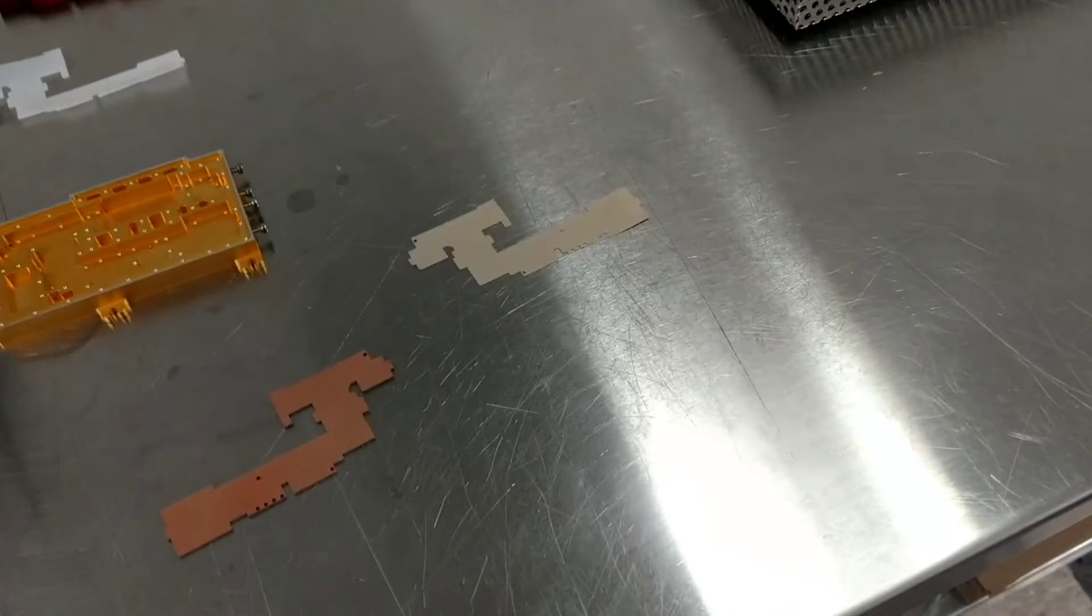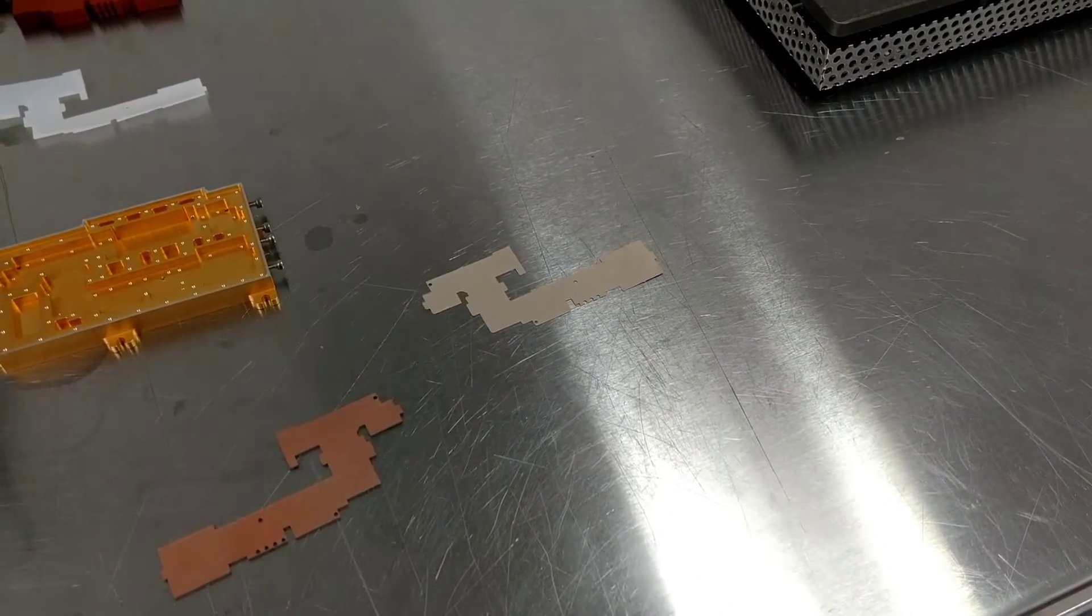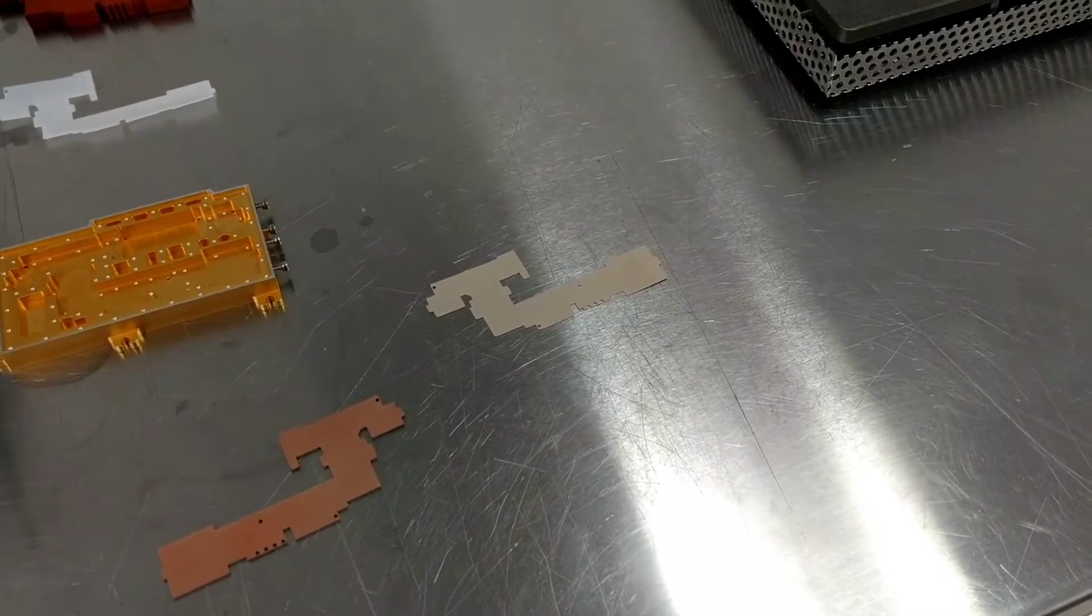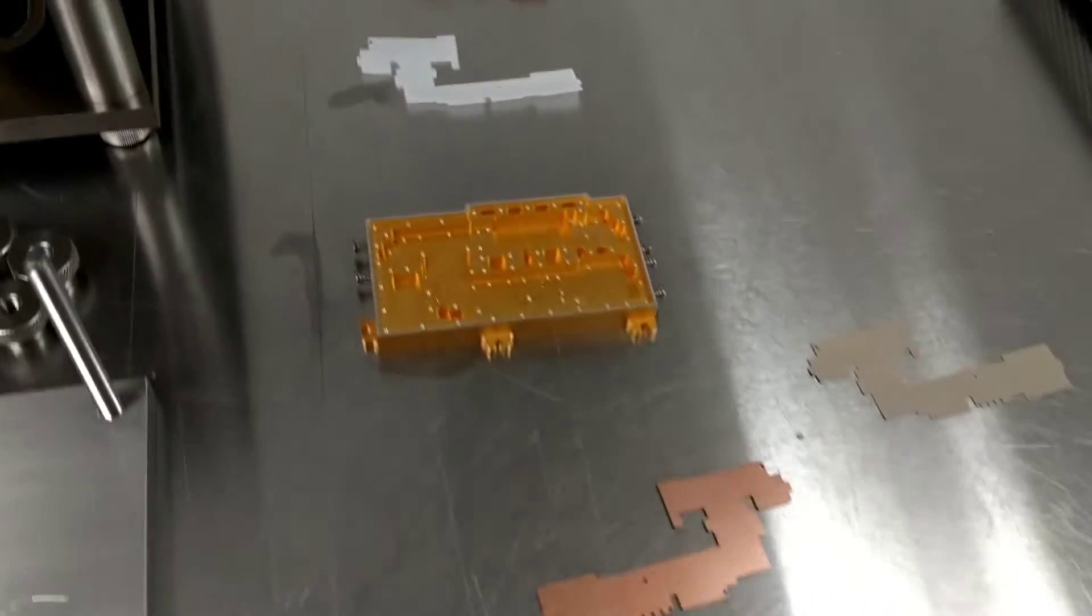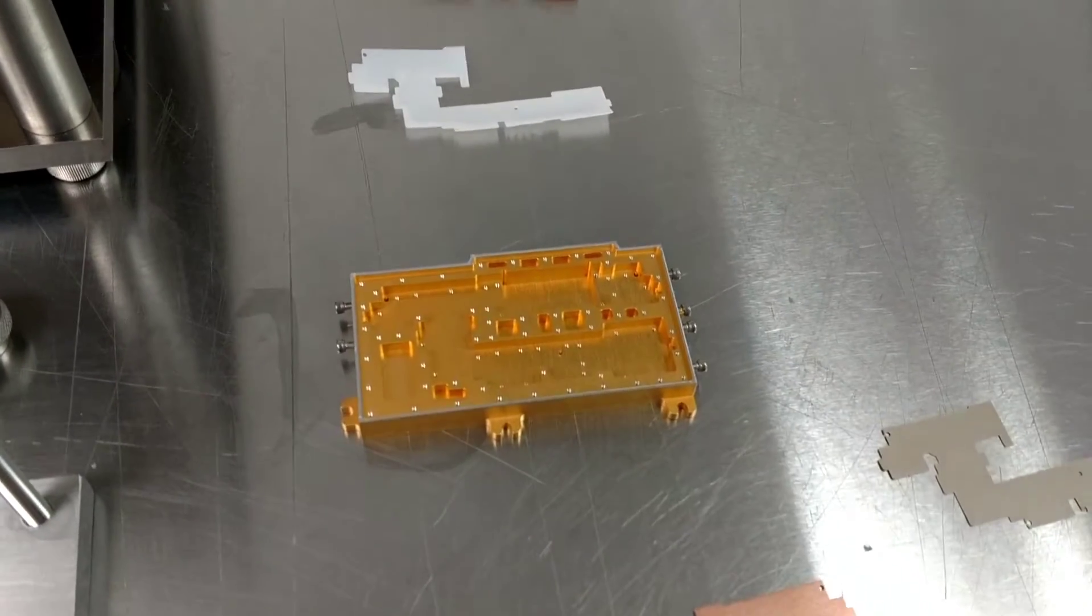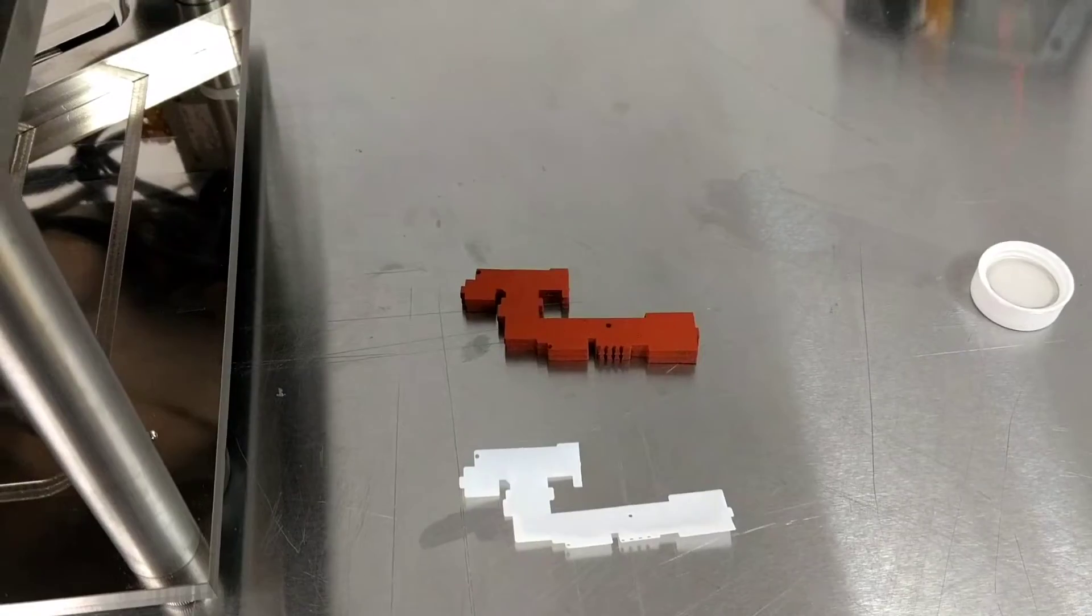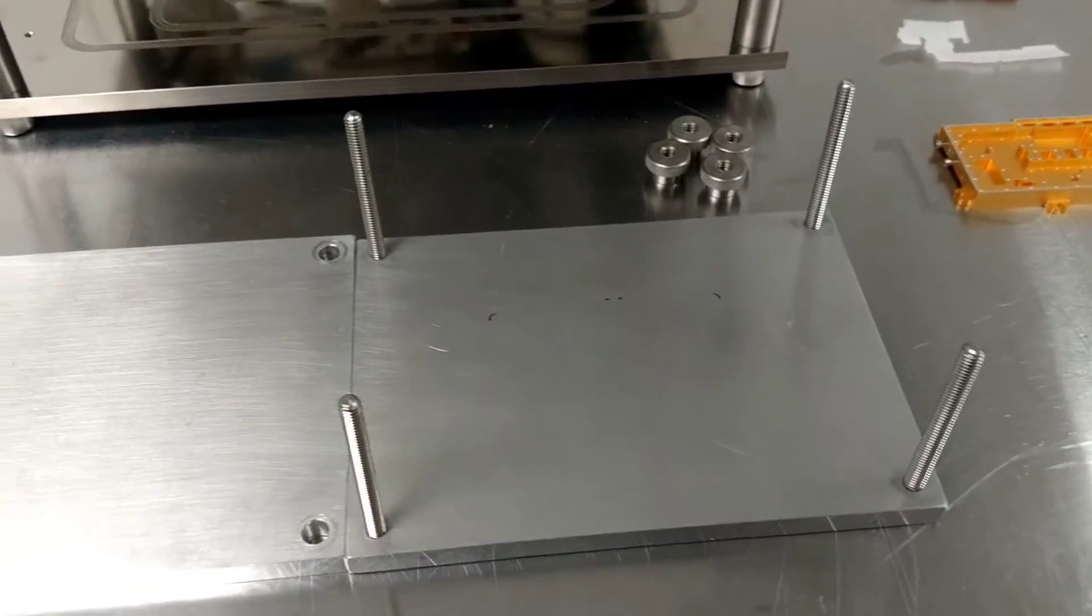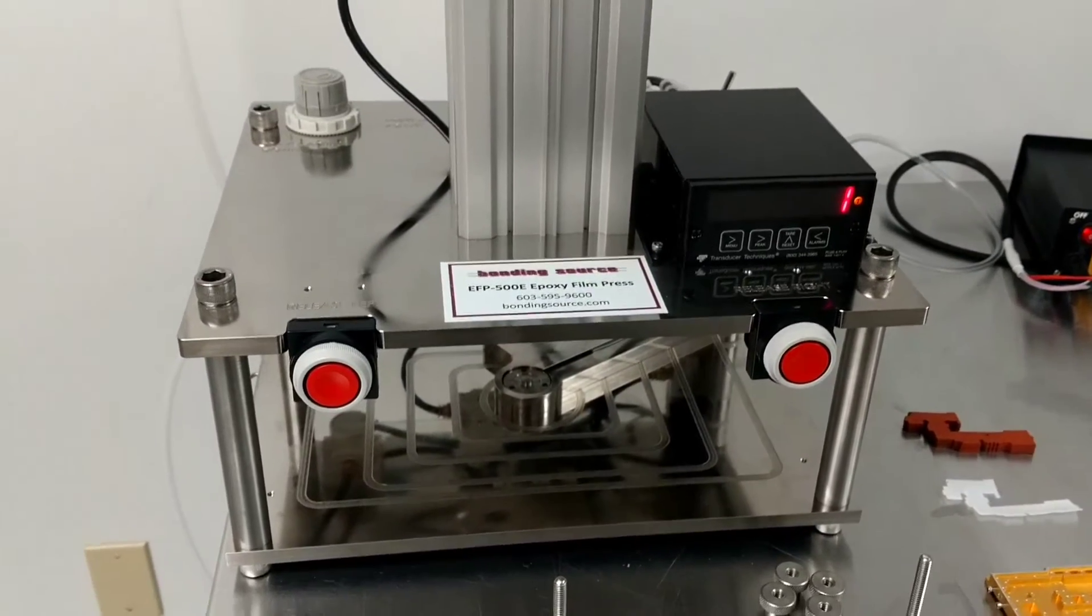We have an epoxy preform. It's a CF30-350 4 mil epoxy preform with release sheets on both top and bottom sides. We have a circuit board pictured here that's upside down, an aluminum gold-plated housing, a Teflon slip sheet, silicone press board, we have an aluminum holding fixture, an epoxy bonding press. So that's pretty much what we need to get started.